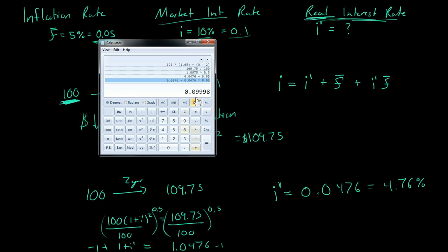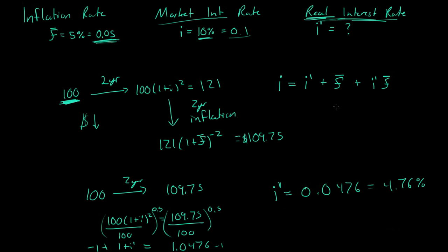plus 0.00476 times 0.005. And that gives us 0.9998. So that gives us 0.09998, which is approximately 10%. So this is a neat little equation to find out the market interest rate, if you know the real interest rate and the inflation rate, this part right here isn't a major component, but you do need it if you're wanting to do something very, if you're wanting to get something very precise.